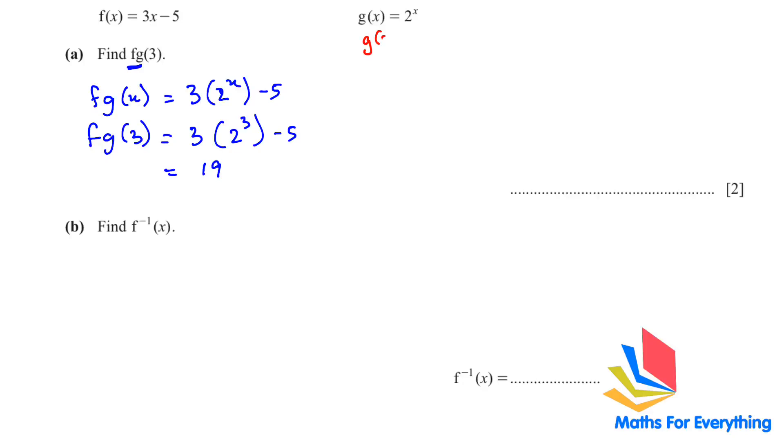The other way is, first find g of 3. So, 2 to the power of 3 is 8. And then substitute this in f(8). So, 3 times 8 minus 5. You need to know how to do this method. Because many times, you will not have a number. You might just have x.